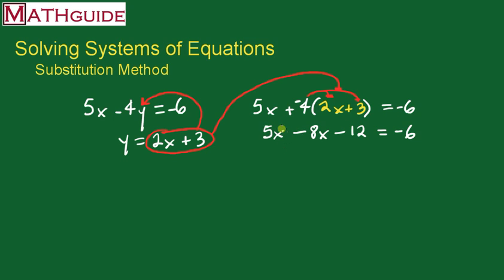Now I'm going to combine some like terms. I'm going to combine those two together and get negative 3x minus 12 equals negative 6.